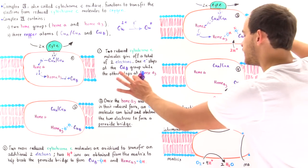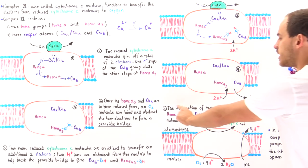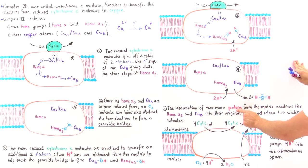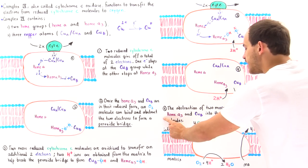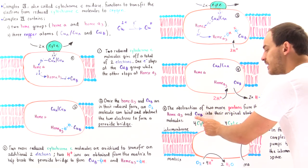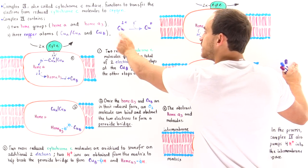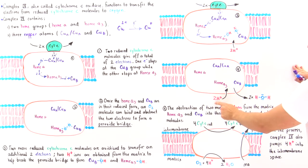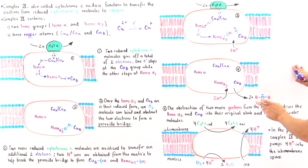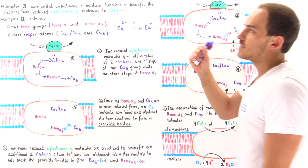In Step 4, the abstraction of two more protons from the matrix oxidizes heme A3 and copper B back to their original oxidized states — copper B is restored to its Cu2+ form. Those two protons are also used to generate two water molecules. This completes the summary of the four steps that take place on Complex 4.